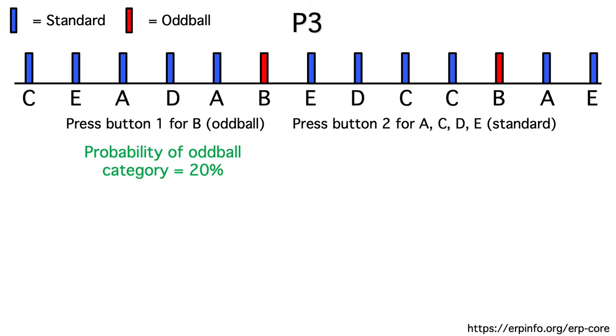This task requires classifying B as one category with a probability of 20%, and it requires grouping the other four letters together as a separate category with a probability of 80%. Although each individual non-target letter has a probability of 20%, they're grouped into a task-defined category with a probability of 80%. We should therefore get a bigger P3 for B's than for the other letters.